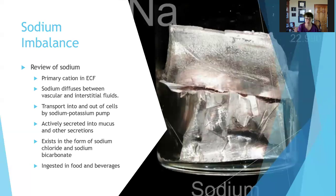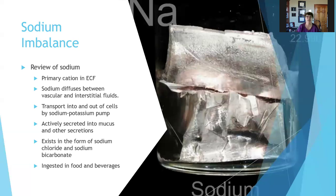Sodium is the primary cation in extracellular fluid and diffuses between vascular and interstitial fluids. It's transported in and out of cells actively using ATP via a sodium-potassium pump, which actively transports sodium out of the cell and potassium into the cell to maintain the chemical gradients needed for nerve impulses. Sodium is also actively secreted into mucus and other secretions — that's why your tears taste salty.